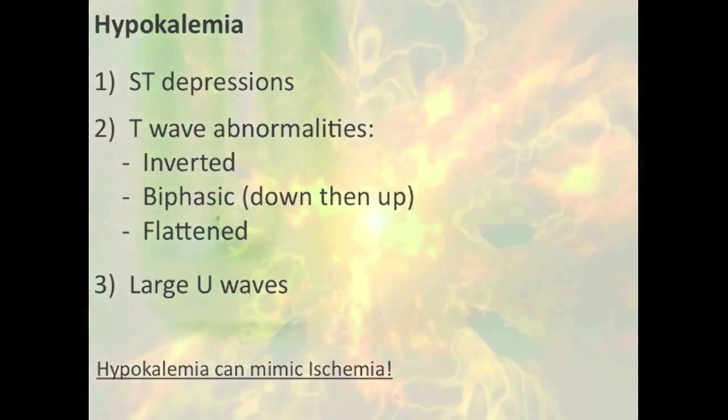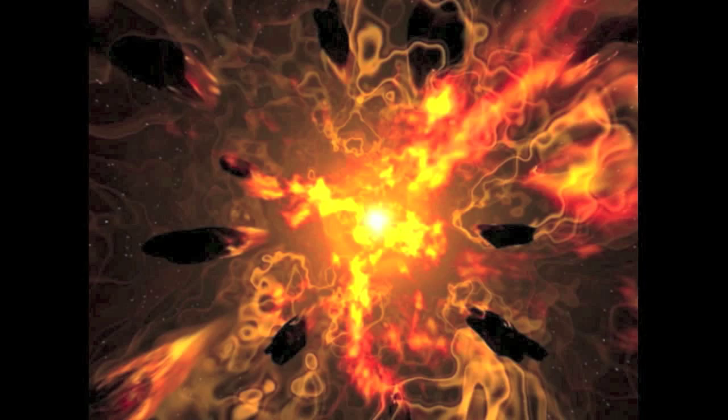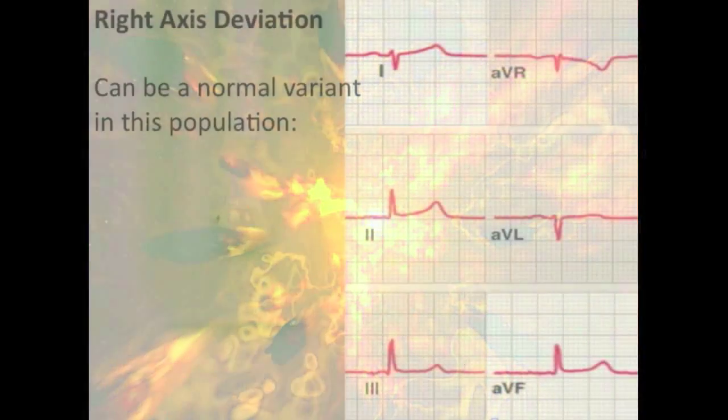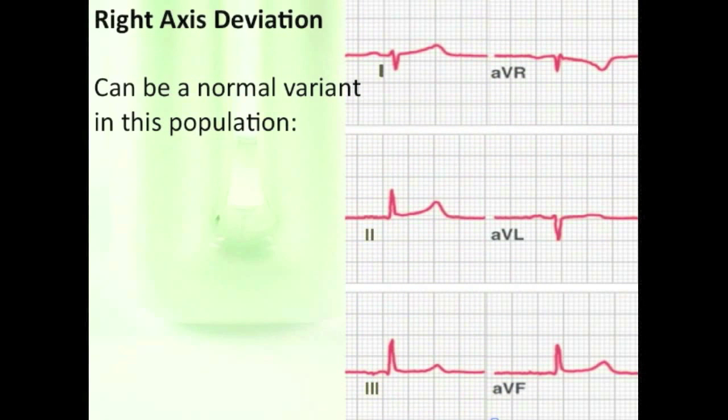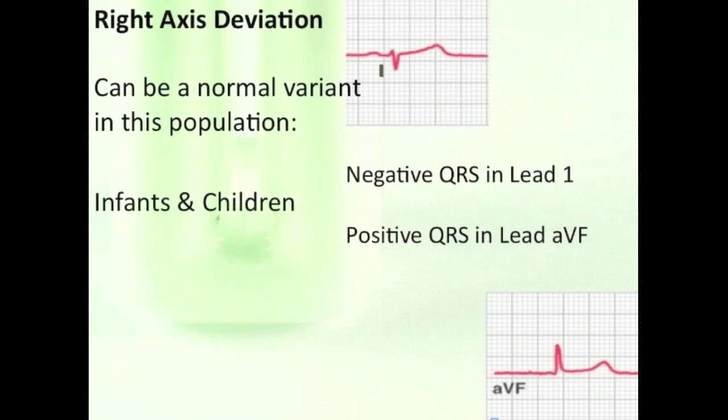In which type of patient is the physiologic variant of right axis deviation more common? I'll give you a hint, it has to do with age. Right, so infants and children can often have a normal rightward QRS axis.